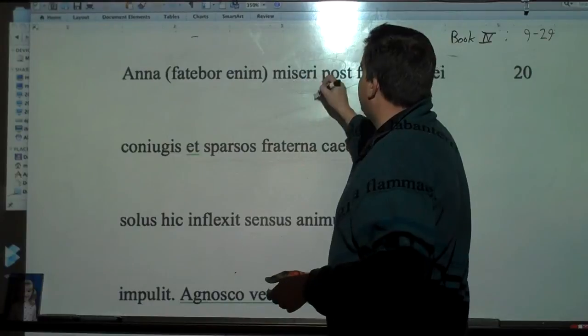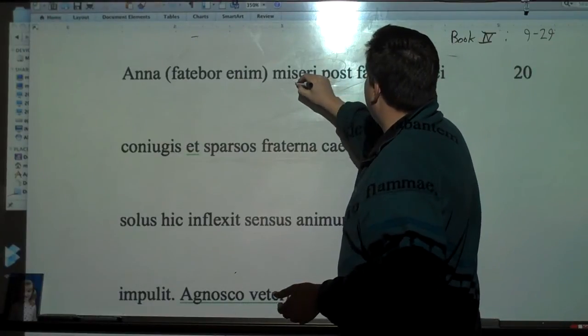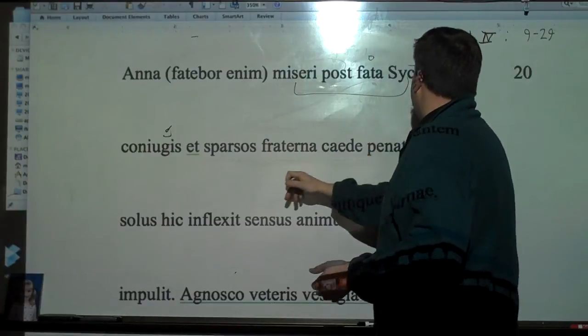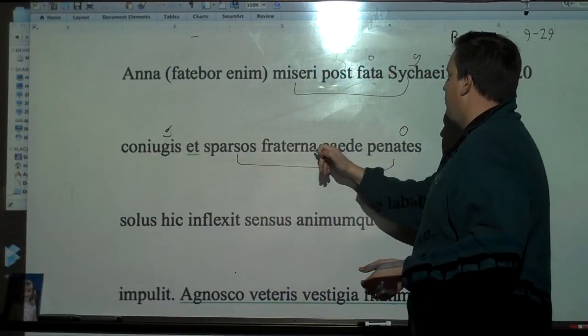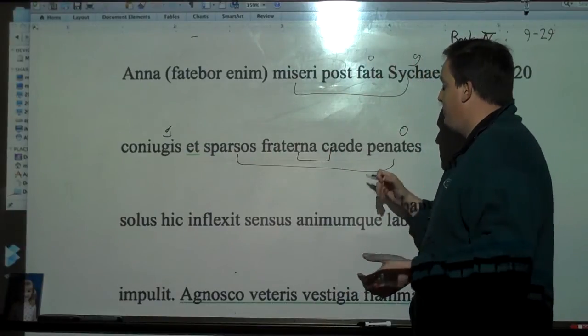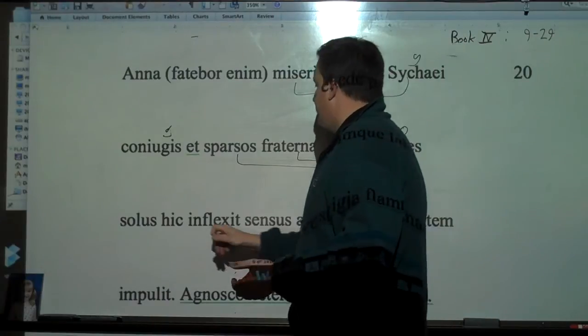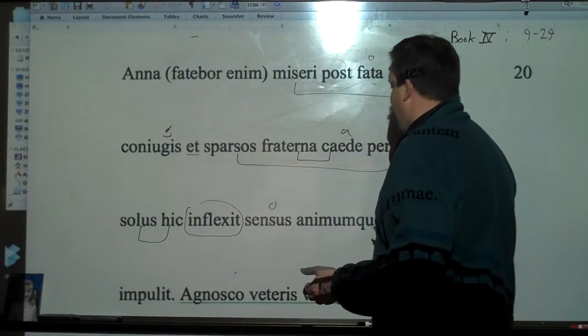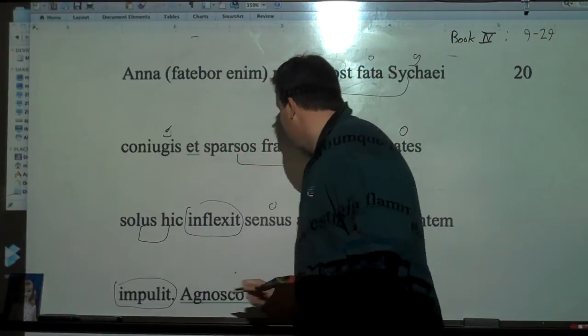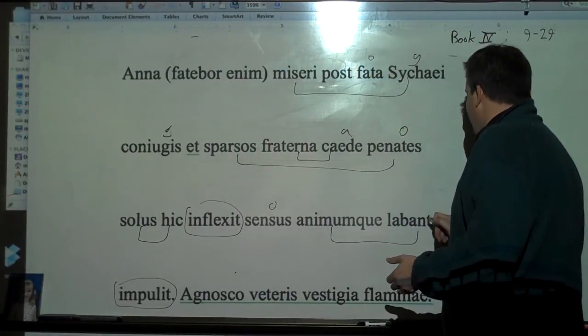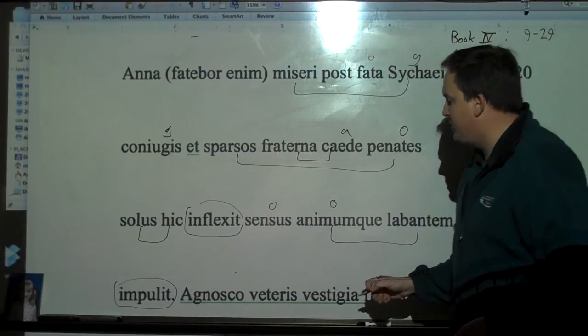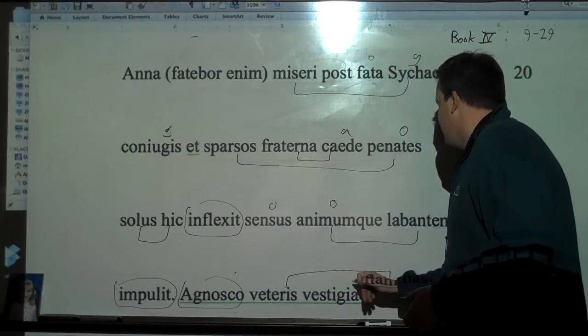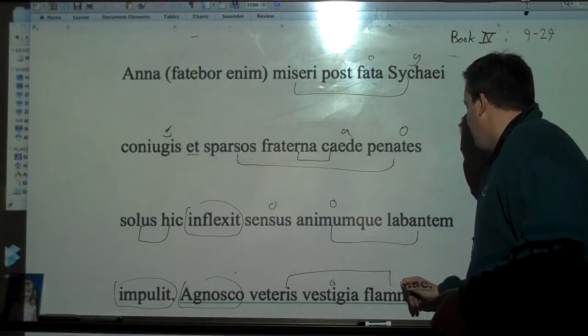Anna, for I will confess. After the fates of my, of miserable Sychaeus, my spouse. And, after the sprinkled, after the penates, sprinkled with paternal blood. This is referring back to her husband being killed by her brother, of course. Solus hic. This man alone, inflexis, bends my senses and drives, strikes my slipping mine. And, then she goes on and says, agnosco. I recognize the steps, or the remains, or the traces of my, of the old flame, love.